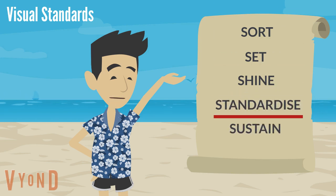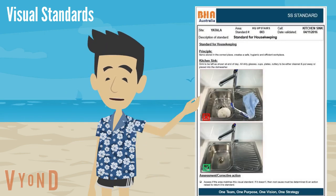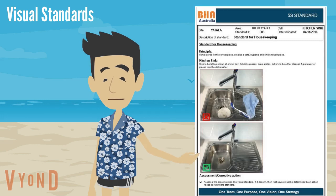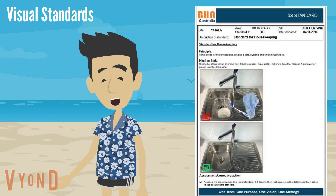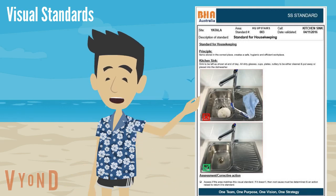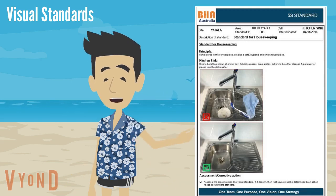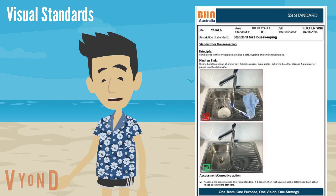Visual standards are part of the standardize stage. In the first three stages of the 5S activity, we've set up a new way of working. Once this is done, we take specific photos and create a standard. A visual standard reminds us of what good looks like, and is a great tool to help us maintain this new way of working.